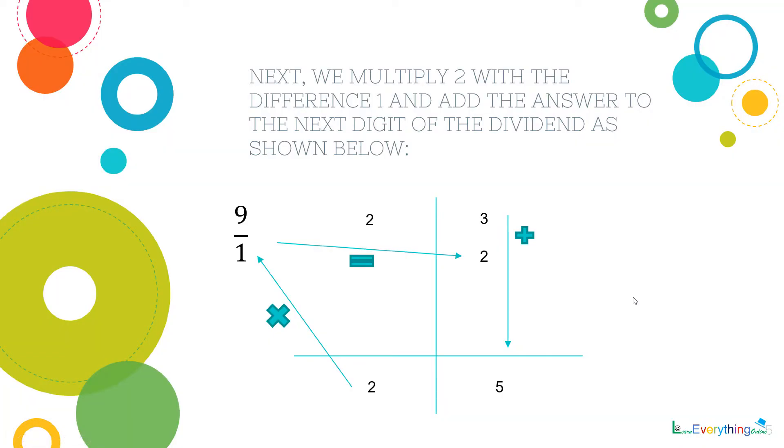Next, we multiply 2 with the difference 1 and add the answer to the next digit of the dividend as shown below in the RHS. Now, 9 upon 1.